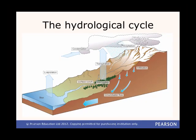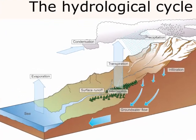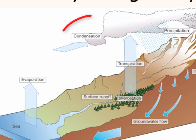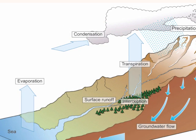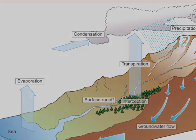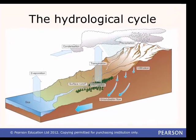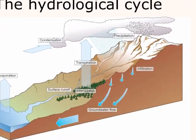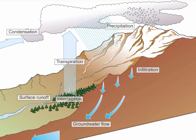Warm air can hold more moisture than cool air. When the water vapour in the atmosphere is cooled, it forms liquid water again. This is called condensation. It is this process that creates clouds. The water droplets formed by condensation fall as precipitation: rain, sleet, snow, hail.